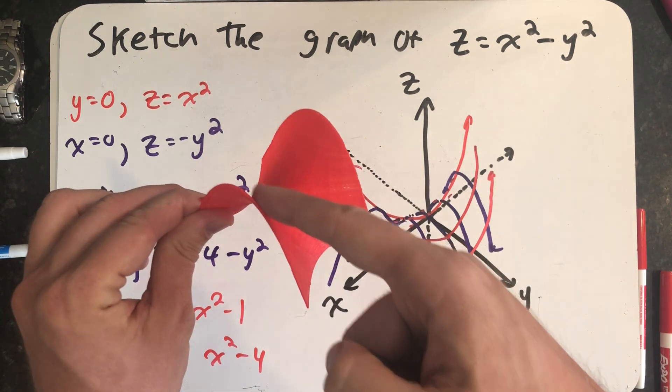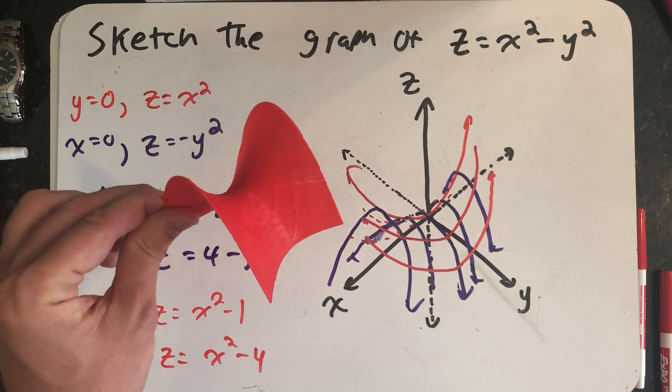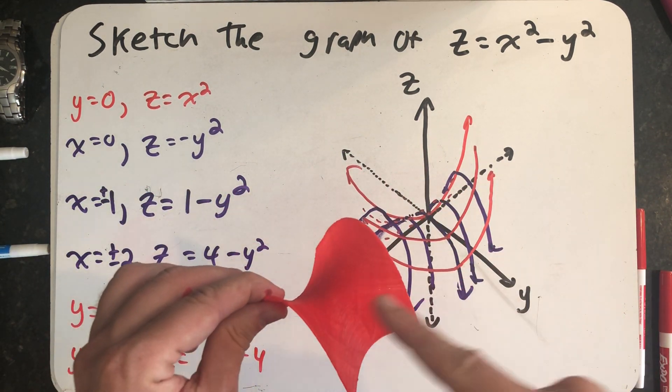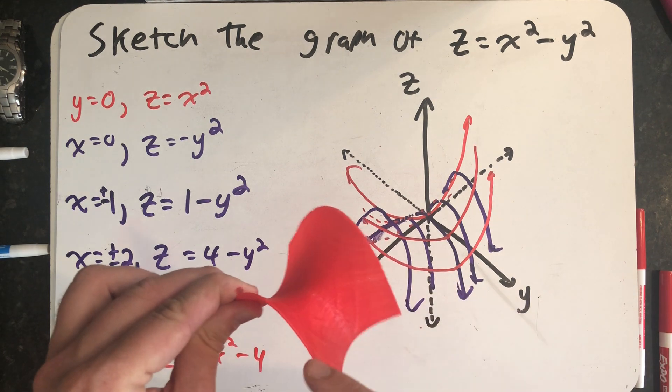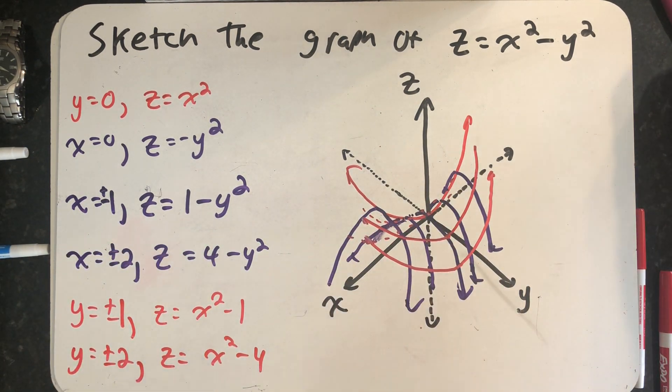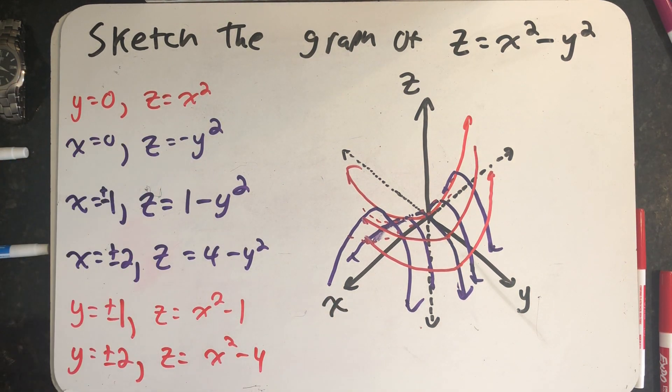Further up and further up, when x was equal to plus or minus one, when y is equal to plus or minus one, that's these parabolas that still trace up and down. We put slices together where x is equal to something, where y is equal to something, and we keep getting parabolas.